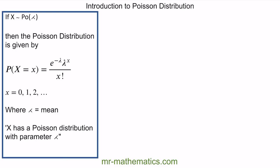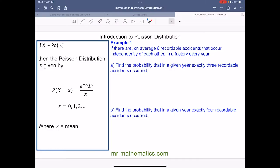Let's work through a real-life example. In example one, we're told that on average six recordable accidents occur independently of each other in the factory every year. We're asked to find the probability that in a given year exactly three recordable accidents occurred. First, we define our model: x is distributed with a Poisson of average six. Let x be the random variable — the number of recordable accidents in a year.